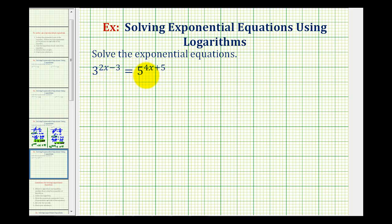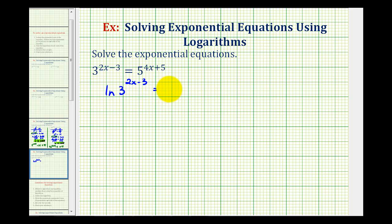Once it's in this form, we'll take the natural log of both sides of the equation and then solve for x. Because we'll be using the calculator to solve this, we want to use natural log or common log. So we'll take the natural log of both sides: the natural log of three raised to the power of two x minus three equals the natural log of five raised to the power of four x plus five.